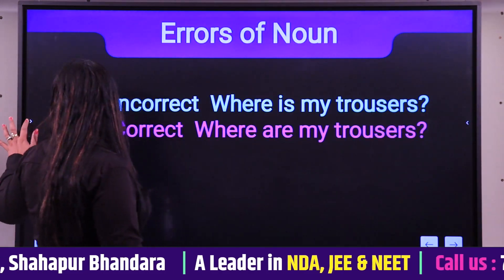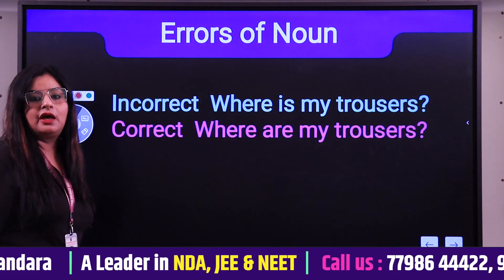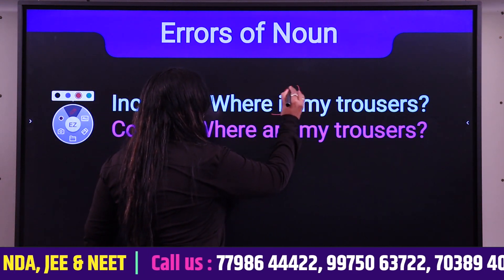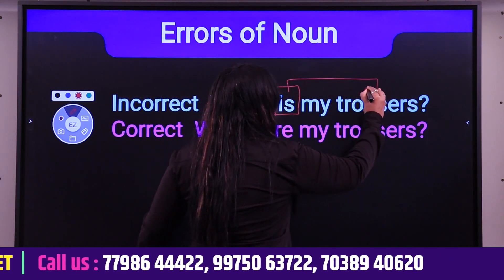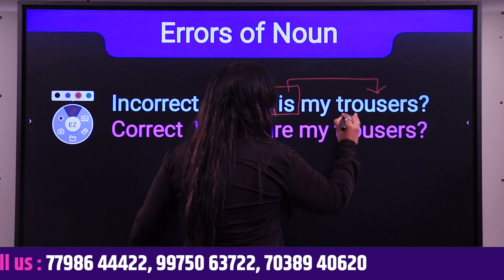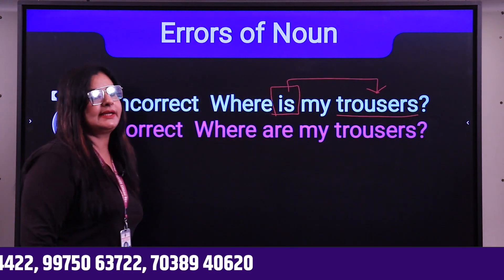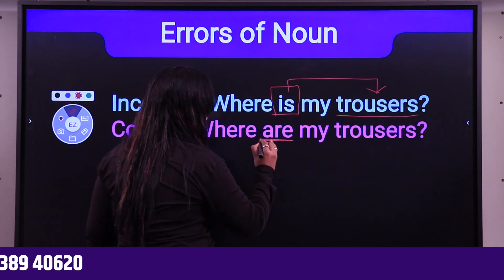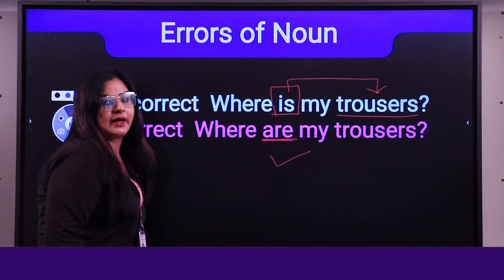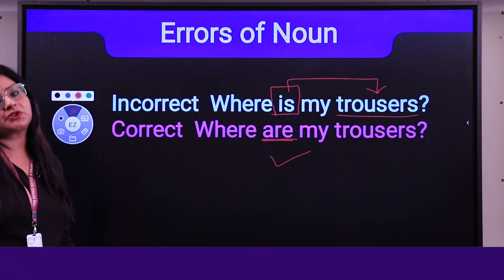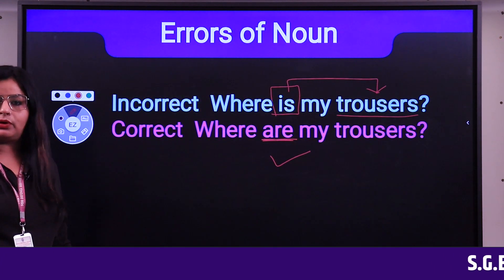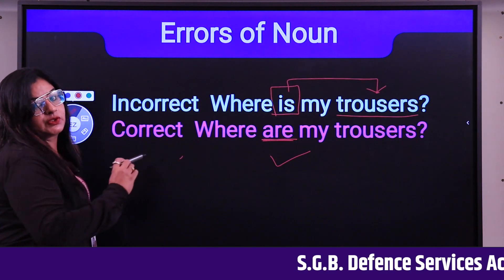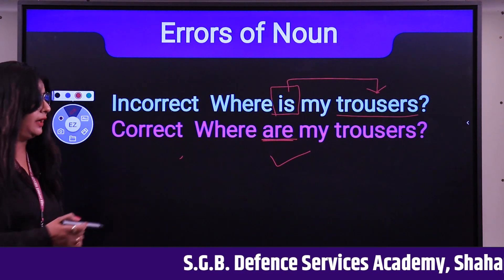Practice sentence: 'Where is my trousers?' Since trousers is a plural noun, 'is' is wrong — it should be 'are.' Correct: 'Where are my trousers?' Both the incorrect and correct forms are shown so students can clearly differentiate between them.